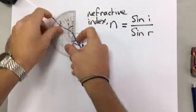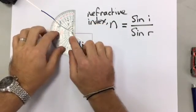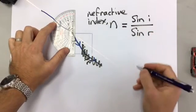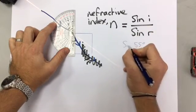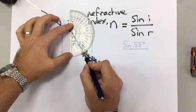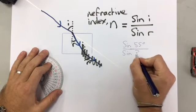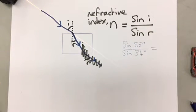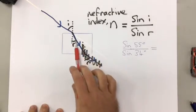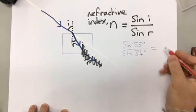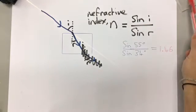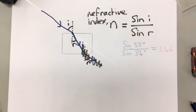I'm going to do that now. I'll measure my angle of incidence. It's slightly difficult because I've used a thick marker pen, but we can see that the angle of incidence is approximately 55 degrees. And the angle of refraction is approximately 34 degrees. Into my calculator, I put sine 55 divided by sine 34, and that gives me a refractive index for air into this particular type of glass of 1.46. A refractive index does not have any units.